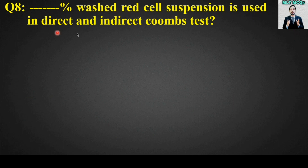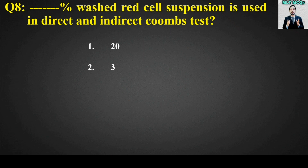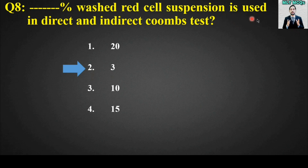MCQ number eight: Blank percent washed red cell suspension is used in direct and indirect Coombs test. Options: 20%, 3%, 10%, or 15%. The right answer is option number two — 3%. Three percent washed red cell suspension is used in direct and indirect Coombs test.